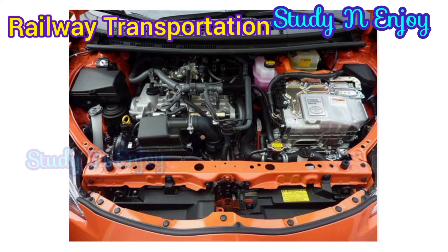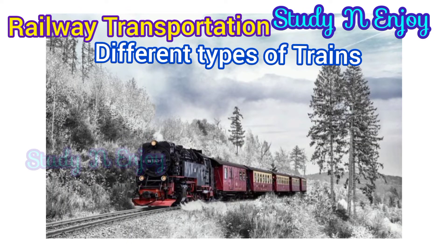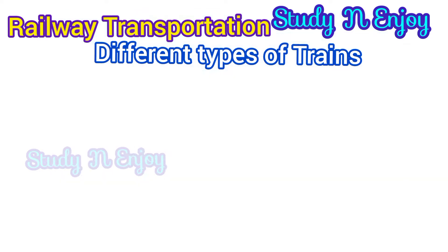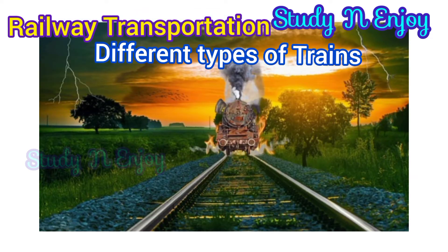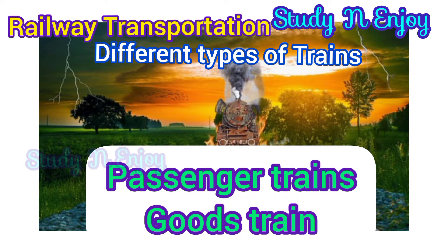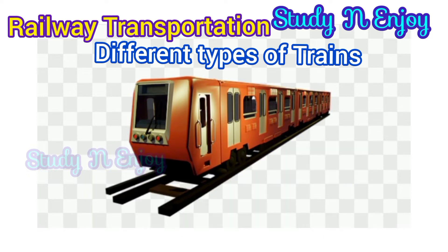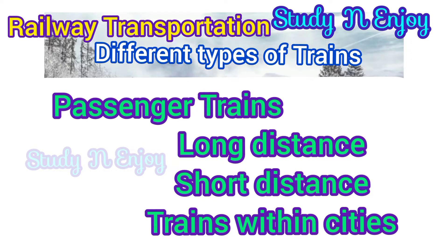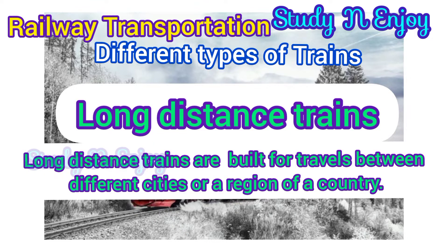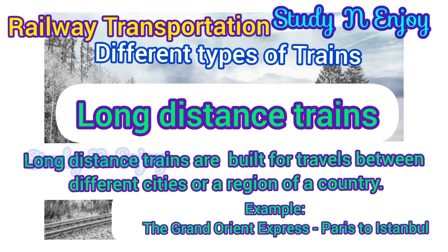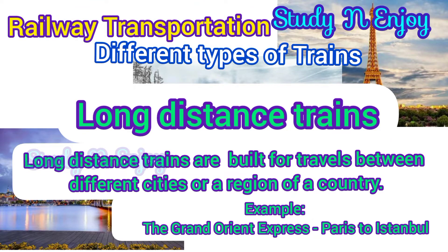There are different types of trains throughout the world — passenger trains or goods trains. Passenger trains can be fast and are often really long so they can carry more passengers, and they usually have a fixed schedule. There are three main types of passenger trains: long distance, short distance, and trains within cities. Long distance trains are built for travel between different cities or regions, and they even cross through several countries at times. The Grand Orient Express is an example of long distance trains.